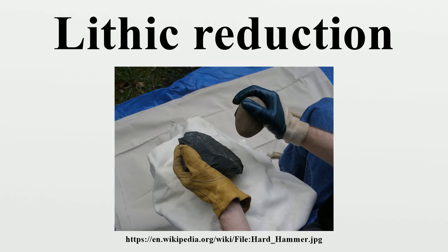Soft hammer flaking is often used after hard hammer flaking in a lithic reduction sequence to do finer work. Soft hammers can also produce longer flakes which aid in the conservation of materials, because they produce a longer cutting edge per unit of mass lost. In most cases, the pressure applied in soft hammer percussion is not enough for the formation of a typical conchoidal fracture. Rather, soft hammer flakes are most often produced by what is referred to as a bending fracture, so-called because the flake is literally bent or peeled from the objective piece. However, a bending fracture can also be produced with a hard hammer. Flakes removed in this manner lack a bulb of percussion and are distinguished instead by the presence of a small lip where the flake's striking platform separated from the objective piece.